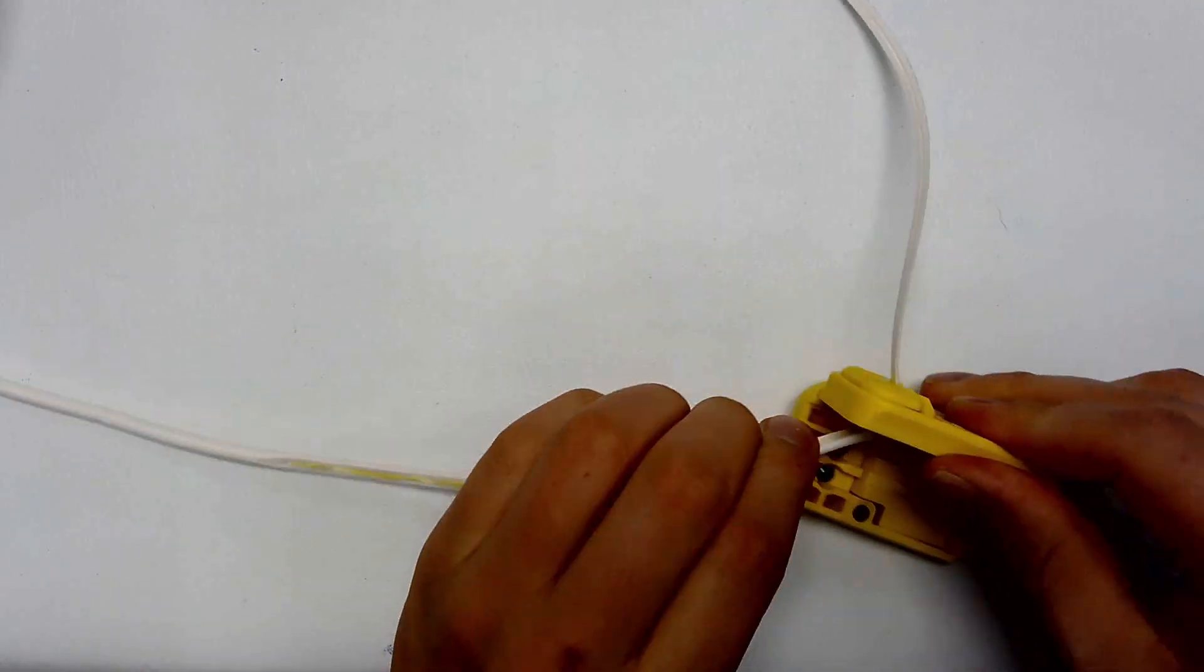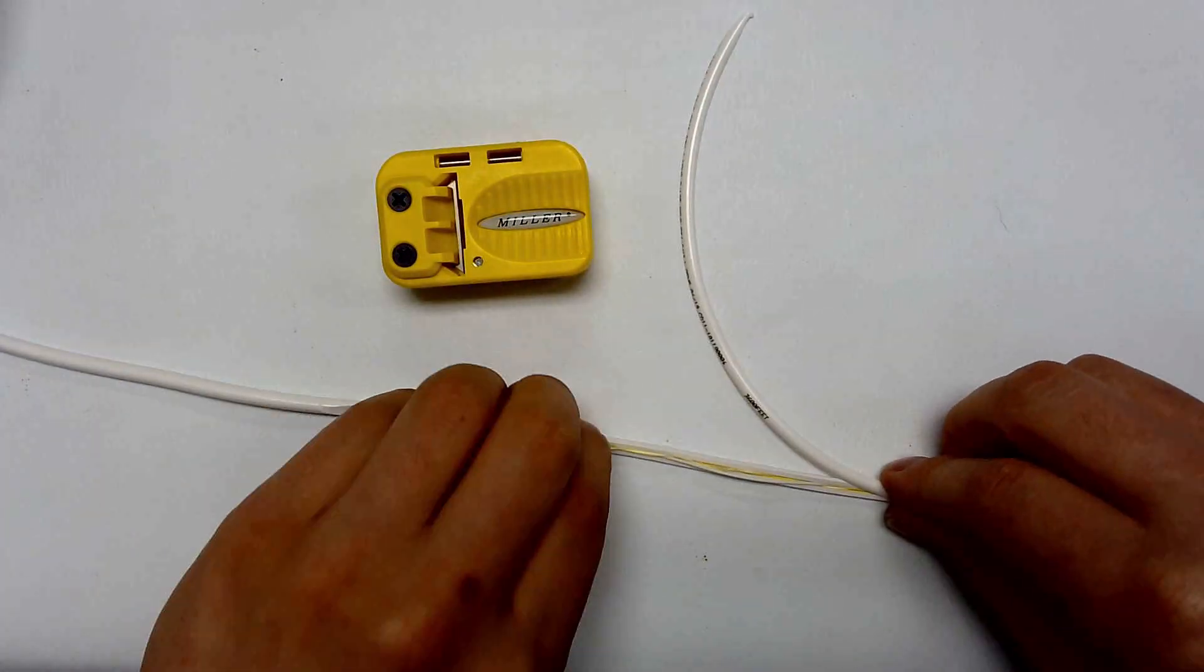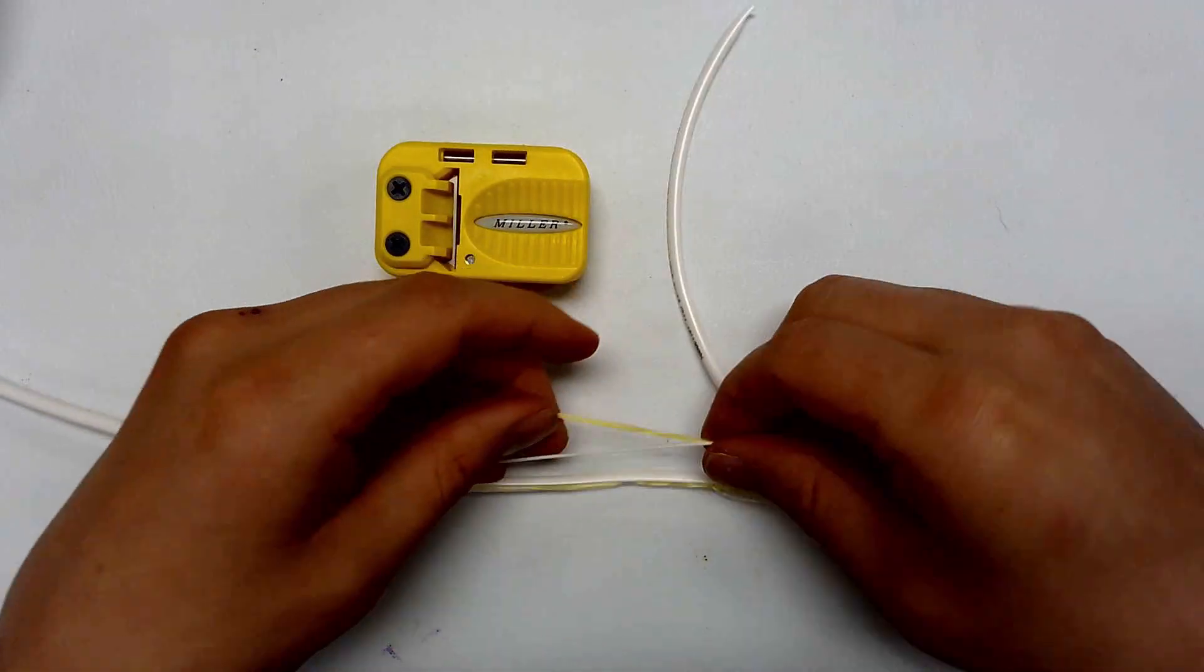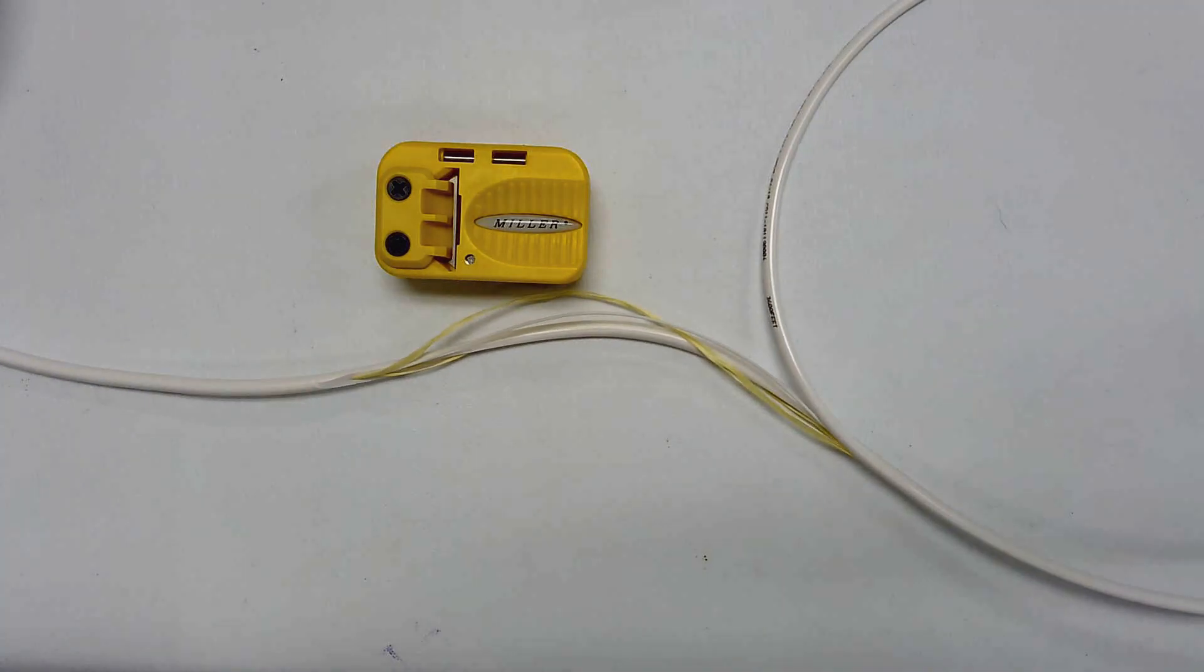The Miller MSAT-X provides safe and reliable access for all your MDU and fiber to the home drop cable needs. No fibers were harmed in the making of this video.